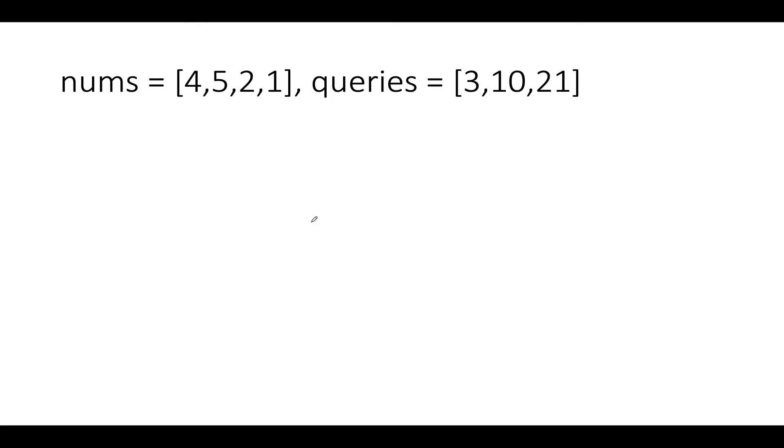Now let's talk about the algorithm. The first and foremost thing I'm going to do is sort this array. Why? Because my target is to accommodate the maximum elements against the query value. I want numbers that are lower in value to be treated first over the ones that have higher values. After sorting we get 1, 2, 4, and 5.